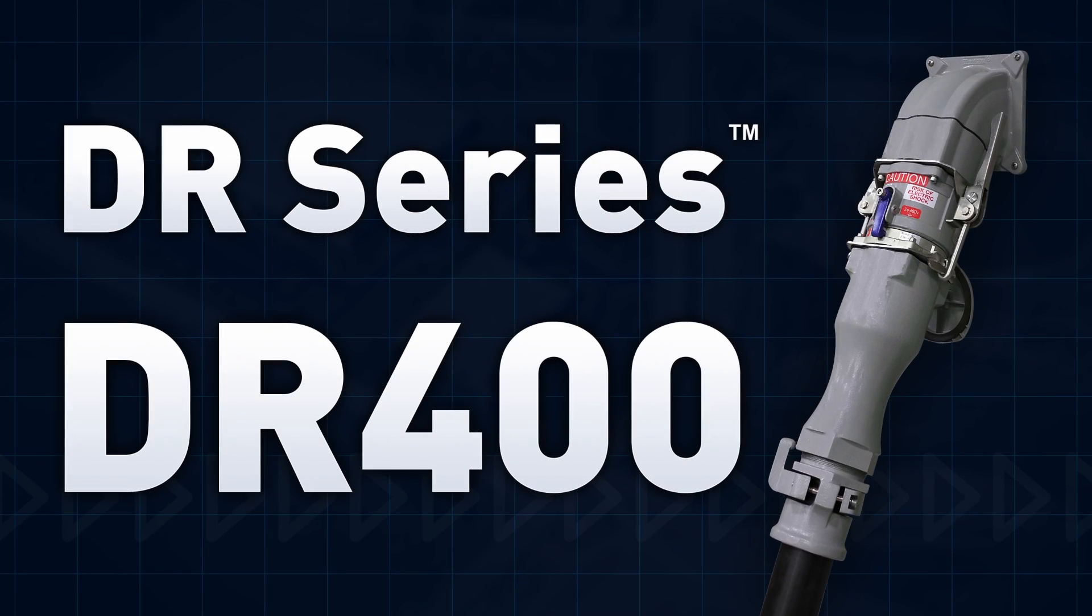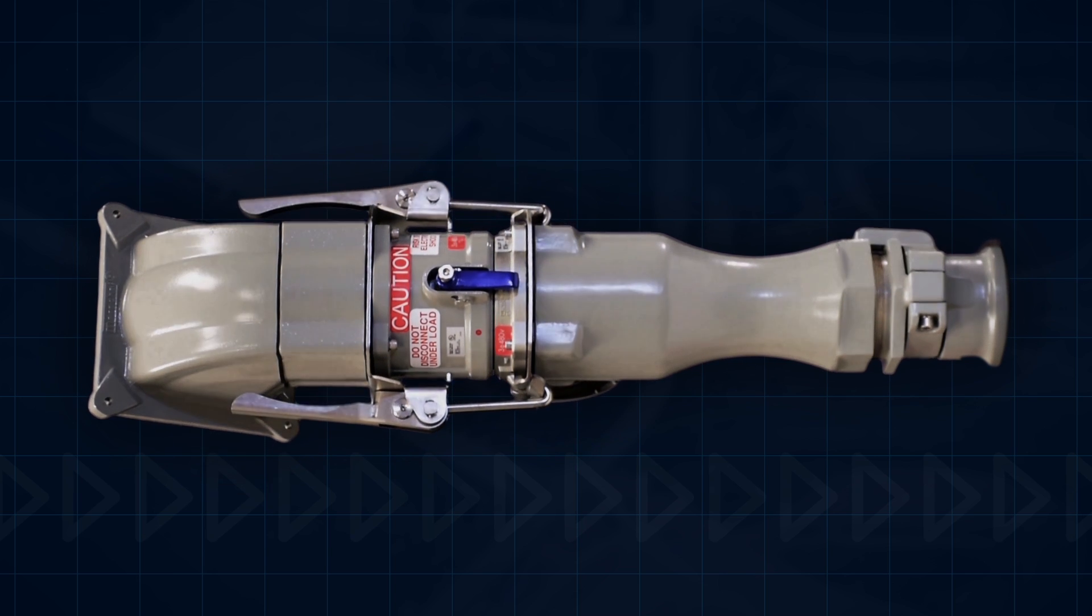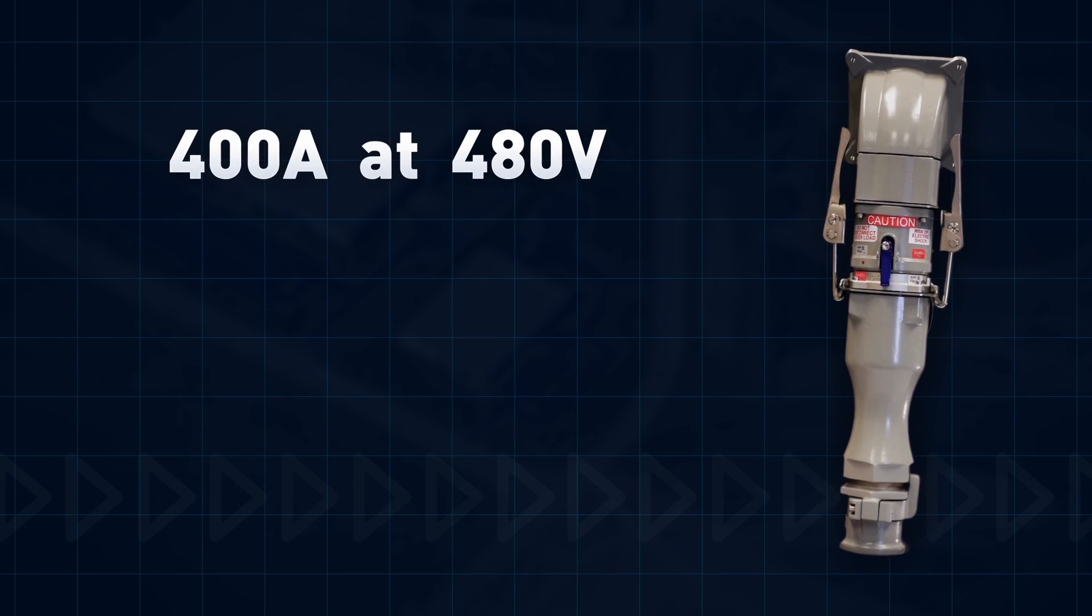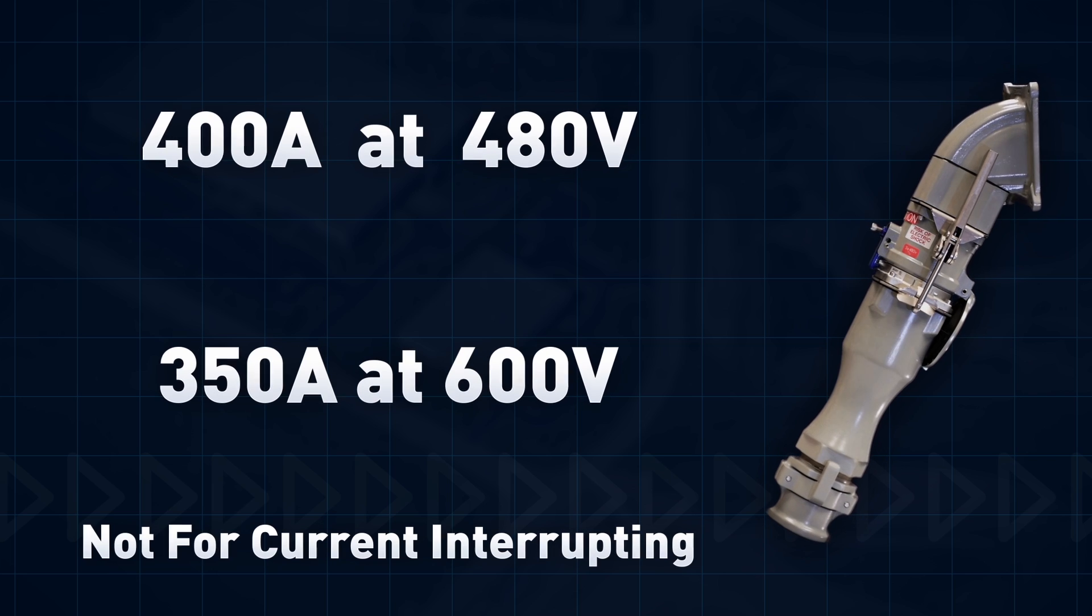Meltric is pleased to introduce the DR400. This heavy-duty high amperage plug-in receptacle with all metal construction and a compact form factor is rated up to 400 amp at 480 volt, 350 amp at 600 volt.